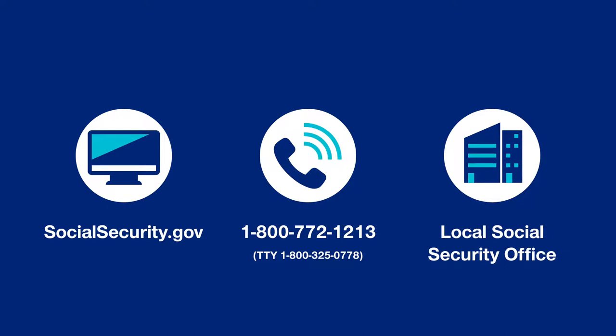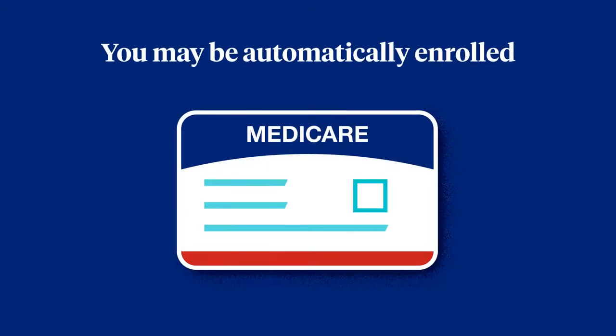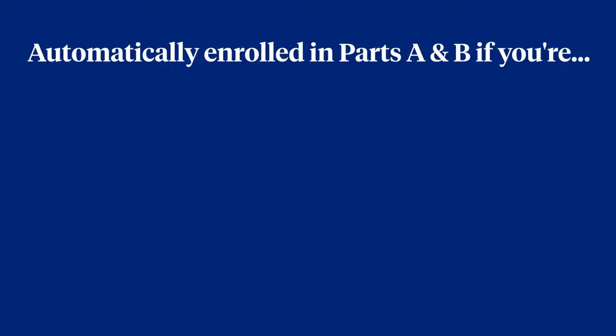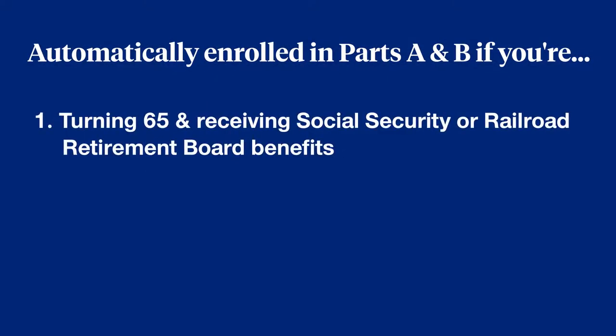Remember, in some cases you may be automatically enrolled in Parts A and B. You'll be automatically enrolled if you are turning 65 and receiving Social Security or Railroad Retirement Board benefits,